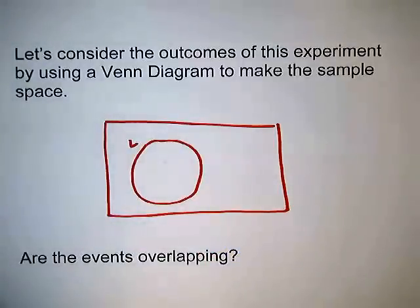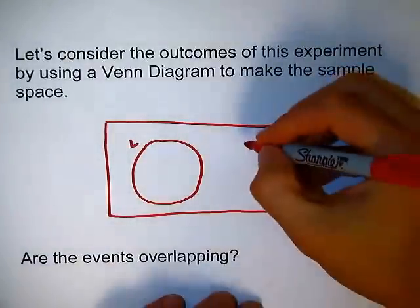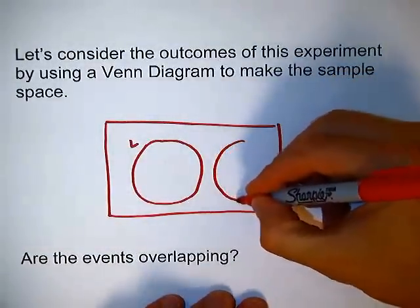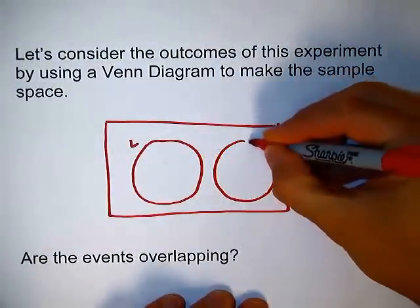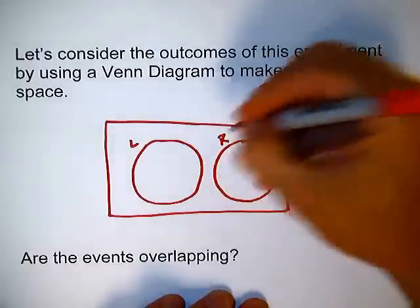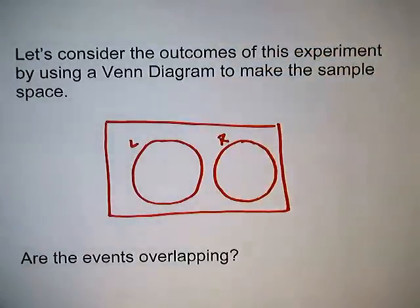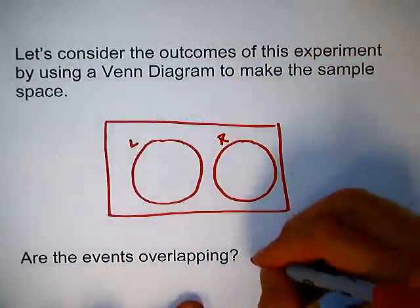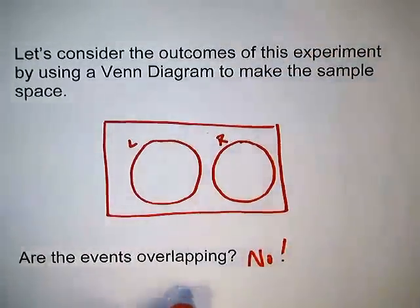The way that I observed, can a car both turn right and left at the same time? And the answer to that is no. So what I'm going to do is, I'm going to draw my circle representing the right-hand turns over here. So are these events overlapping? The answer there is no.